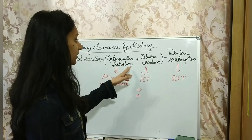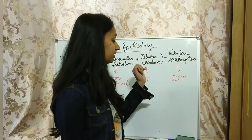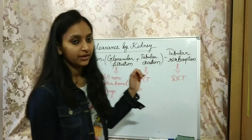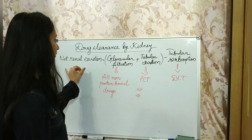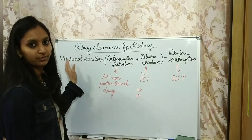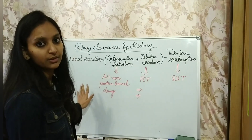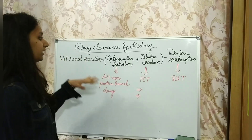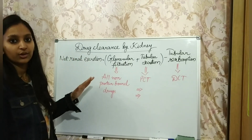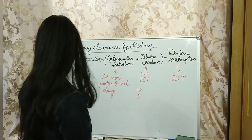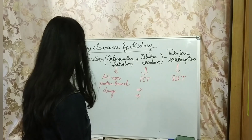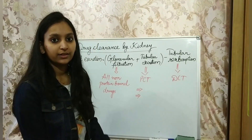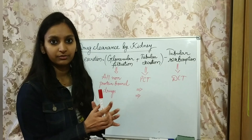Let's get started with the equation. Net renal excretion equals glomerular filtration plus tubular secretion minus tubular reabsorption. This equation should be very familiar from physiology, and any doubts will be cleared in the physiology section.